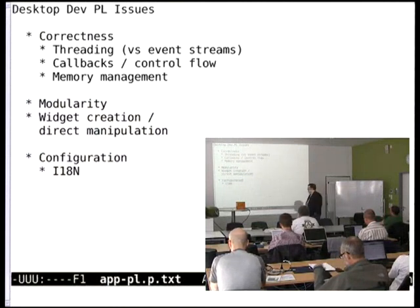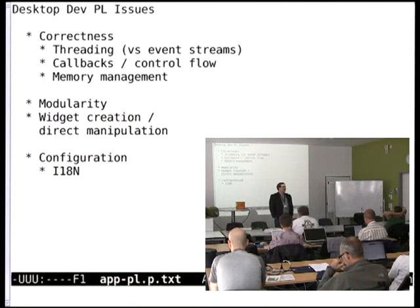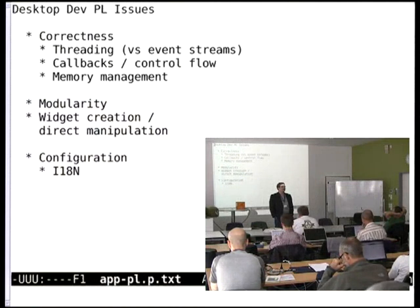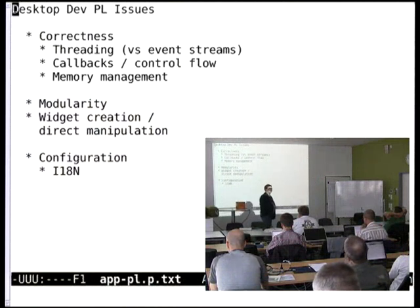We need to have proper automated memory management. The people in this room can probably do the right thing with malloc and free most of the time. The average application developer just can't. If you go look at the memory traces from any application running — not just in X, but on Mac, on Windows — and look at what's going on, it's like, oh yeah, that's screwed up all the time. It's too hard, so we have to help. And yes, there are things that can go wrong with automated memory management also, but it turns out in practice that they aren't as bad.